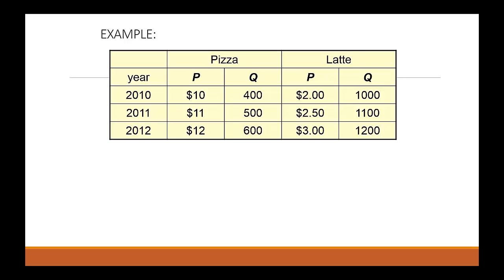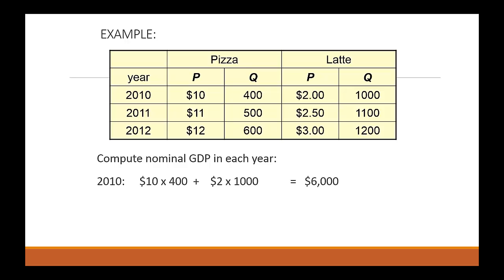Let's highlight this with an example. Let's say this is a typical college town's economy. They produce pizza and they produce lattes. What we have is the actual output produced as well as the market prices for pizza and lattes for three consecutive years.